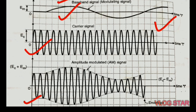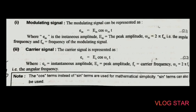Let us see the mathematical equation of the AM wave. First, represent the modulating signal. The modulating signal can be represented as e_m = E_m cos(ω_m t), where E_m is the peak amplitude of the modulating signal.